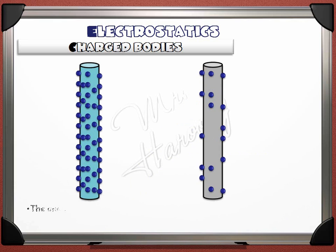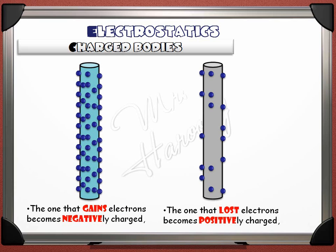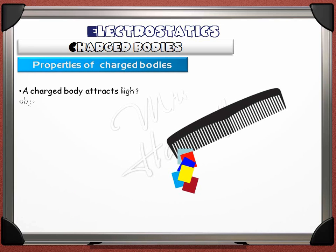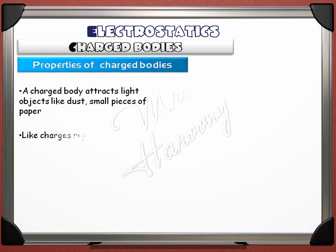The one that gains electrons becomes negatively charged, and the one that lost electrons becomes positively charged. Properties of charged bodies: a charged body attracts light objects like dust and small pieces of paper. Like charges repel, and unlike charges attract.